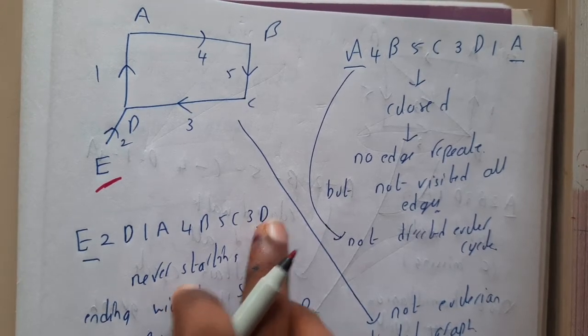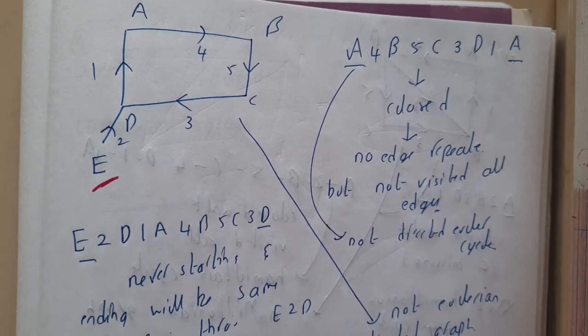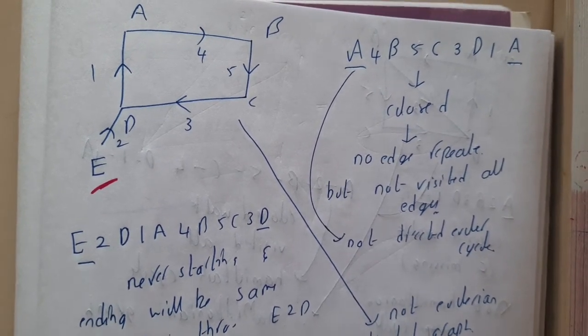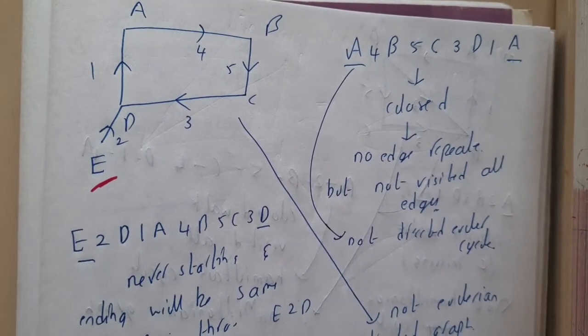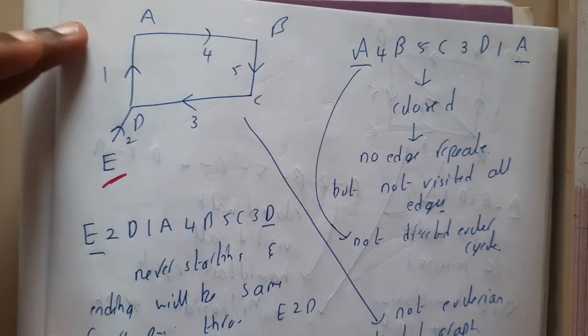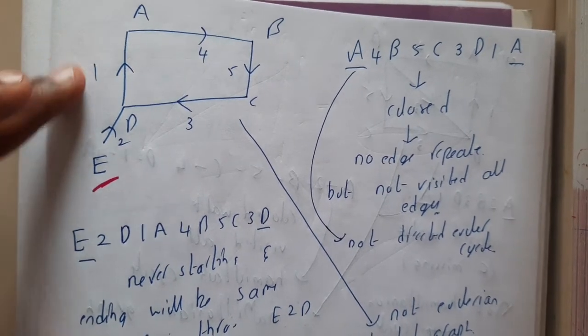I hope everyone got a clear idea about Eulerian directed graphs, guys. I hope everyone watched the Euler graph, the basic undirected Euler graph. If you are having a clear idea about that, it's just a piece of cake for you about Eulerian directed graphs also.